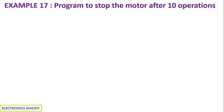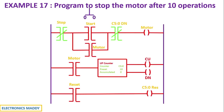Let us look at the ladder diagram first. This is the ladder diagram that is required to stop the motor after 10 operations. You might have a question as to where this is actually applied — why do we want to stop the motor after 10 operations?